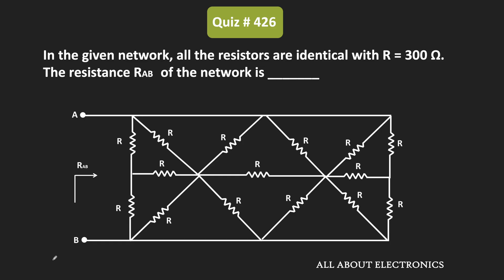Hey friends, welcome to the YouTube channel All About Electronics. In this question, we have been given a resistive network and we have been asked to find the equivalent resistance which is seen across the terminals A and B. All the resistors are identical and their value is equal to 300 Ohm. Let us find the equivalent resistance across terminals A and B.